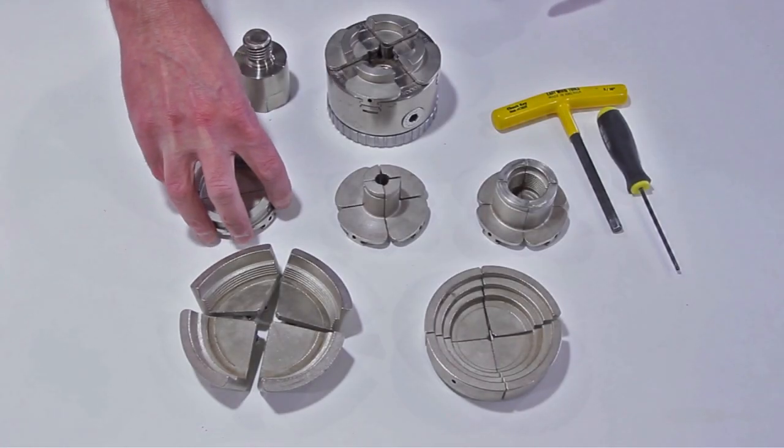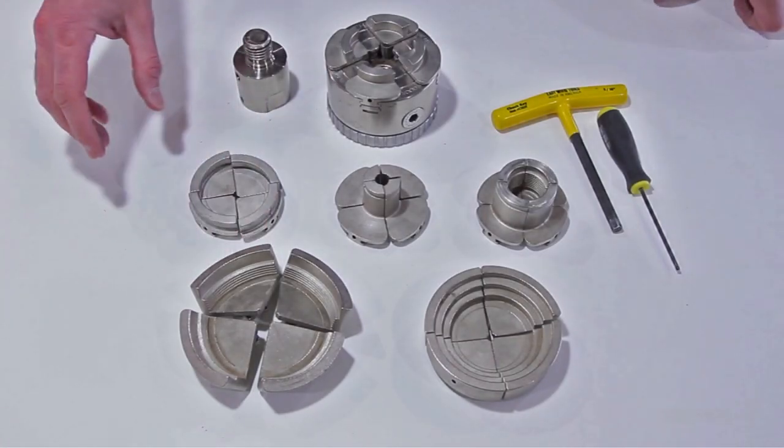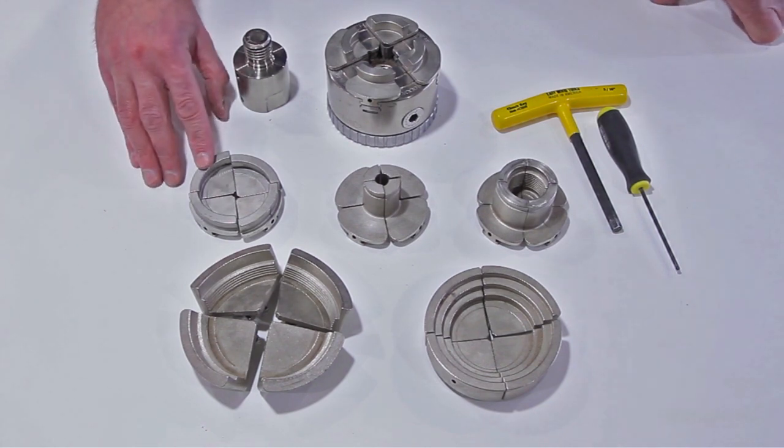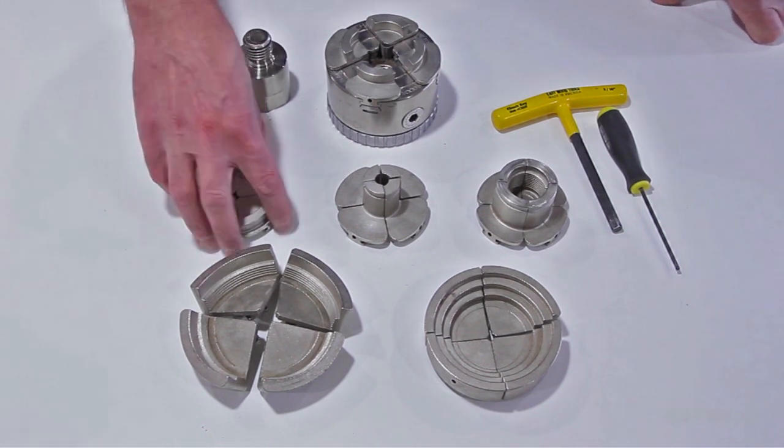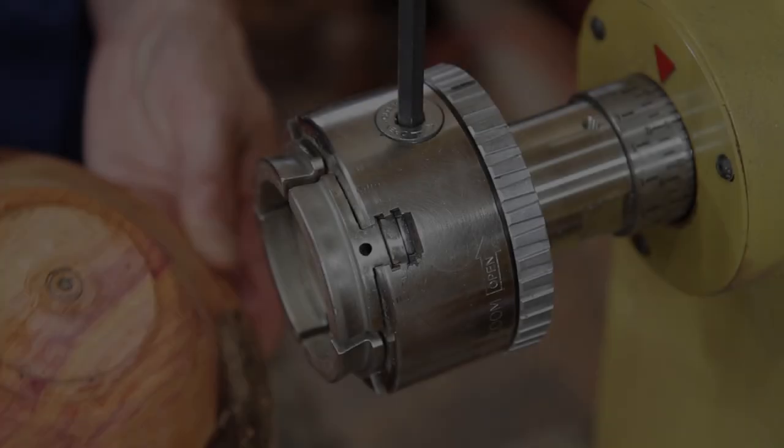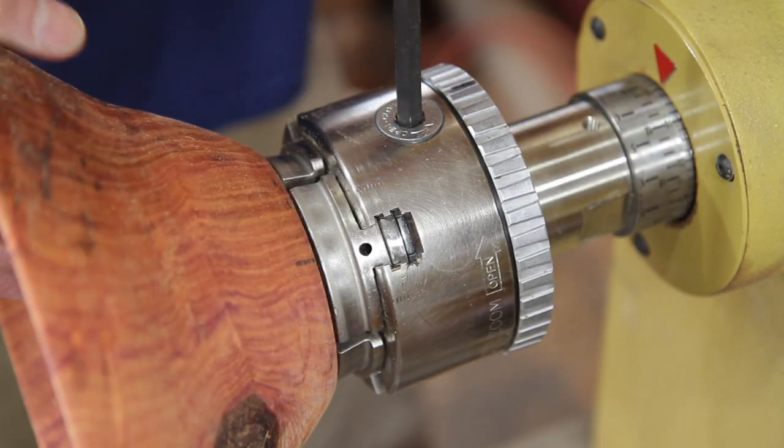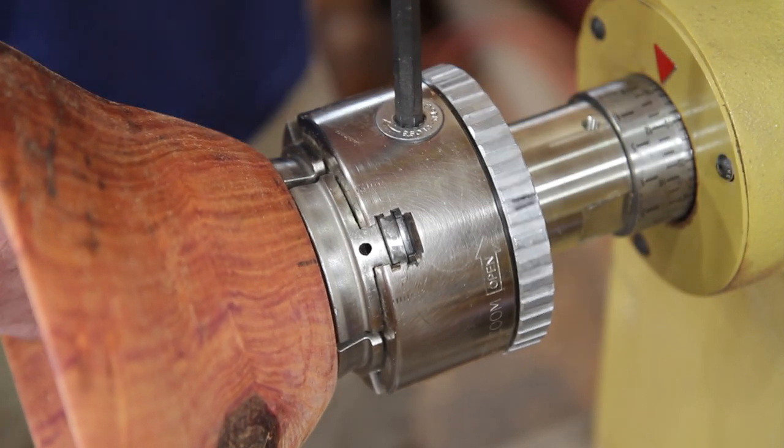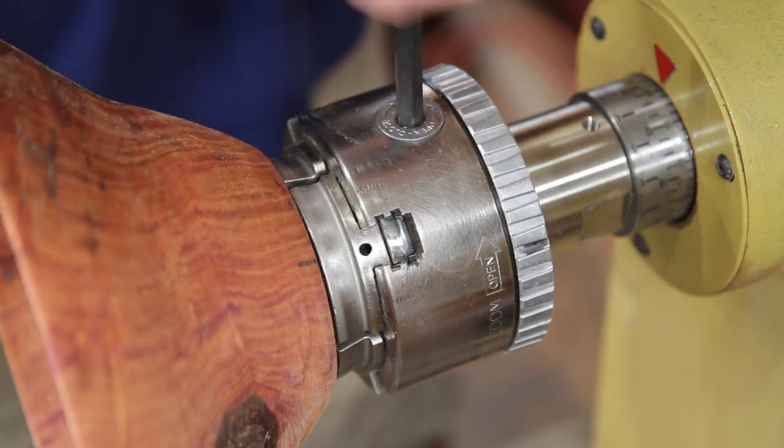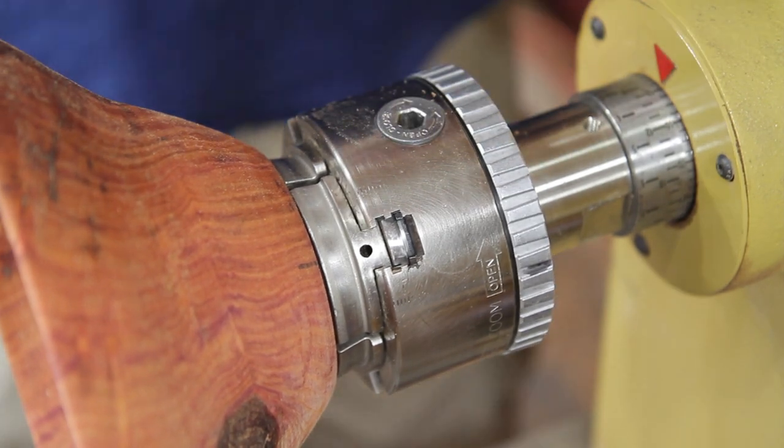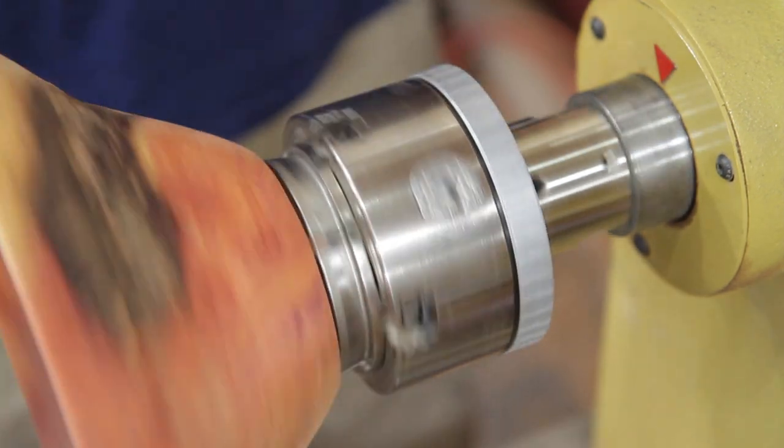And so this set here is another dovetail set. Closed, it's 1⅜ inches, and open it opens up to 3 inches. The 2⅜-inch jaws are designed to hold a bowl or platter up to 12 inches, and the 3½-inch easy reach dovetail jaws can hold a bowl or platter up to 24 inches.